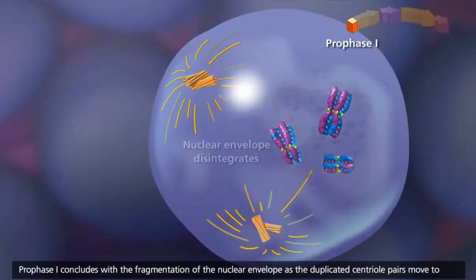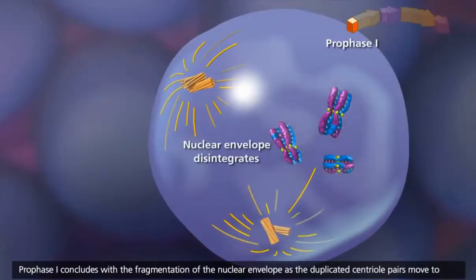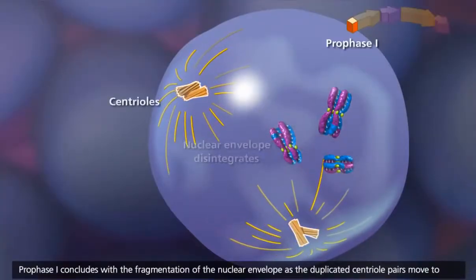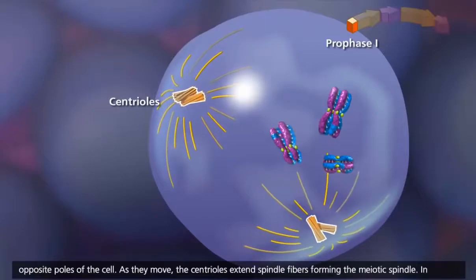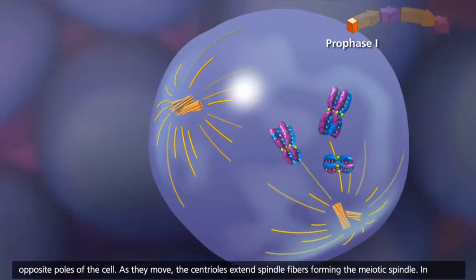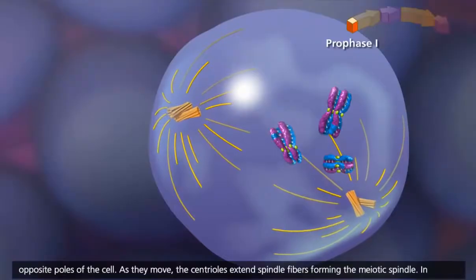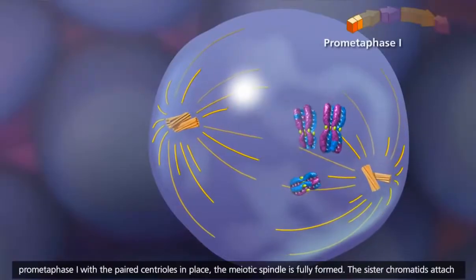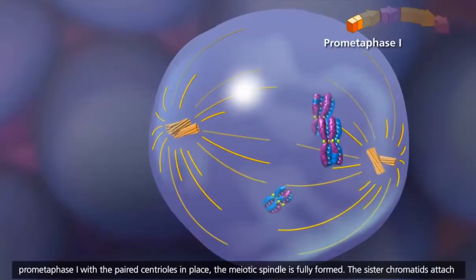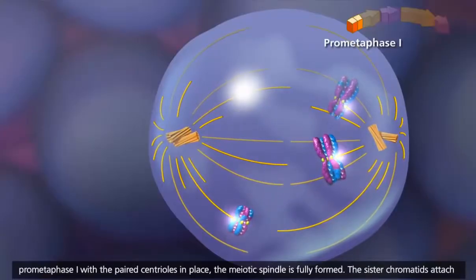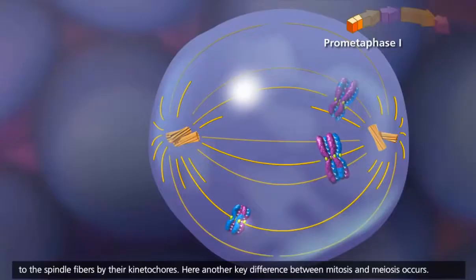Prophase I concludes with the fragmentation of the nuclear envelope as the duplicated centriole pairs move to opposite poles of the cell. As they move, the centrioles extend spindle fibers, forming the meiotic spindle. In prometaphase I, with the paired centrioles in place, the meiotic spindle is fully formed. The sister chromatids attach to the spindle fibers by their kinetochores.